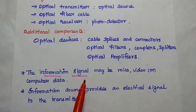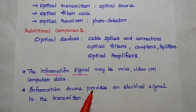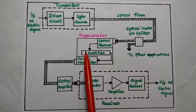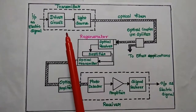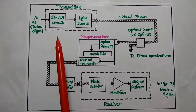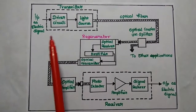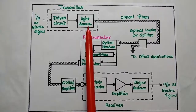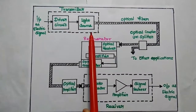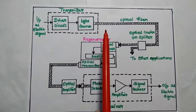The information is in the form of voice, video, or computer data. This is the detailed structure of optical communication system. The transmitter consists of the driver circuit and the light source. The driver circuit is used to drive the electrical signal from the information source to the light source. The light source can be LED or laser, which converts this electrical signal into optical signal.